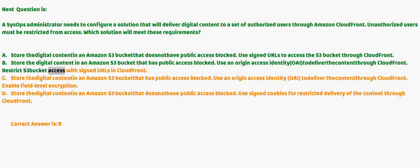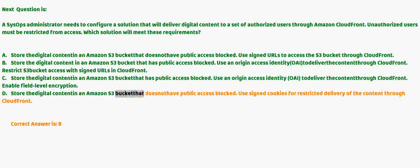Restrict S3 bucket access with signed URLs in CloudFront. C) Store the digital content in an Amazon S3 bucket that has public access blocked; use an Origin Access Identity (OAI) to deliver the content through CloudFront and enable field-level encryption. D) Store the digital content in an Amazon S3 bucket that doesn't have public access blocked; use signed cookies for restricted delivery of the content through CloudFront. Correct answer is B.